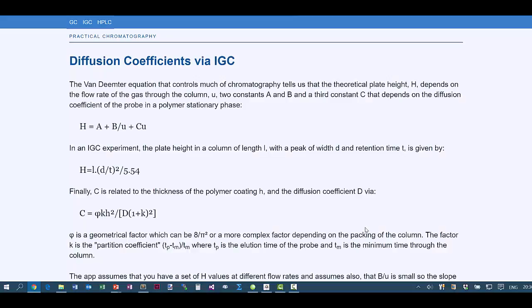One of the basic equations in the whole of chromatography is the Van Diemter equation. And we can calculate the number of theoretical plate heights, H. And that depends on the flow rate of gas through the column, U, two constants A and B, and a third constant C, that actually depends on the diffusion coefficient of the probe in the polymer on the stationary phase.